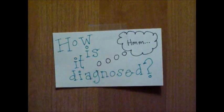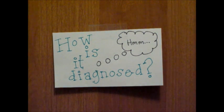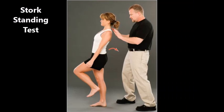How is it diagnosed? A diagnosis is reached after a detailed physical exam and imaging tests have been completed. A one-leg hyperextension, or stork standing test, is routine. The patient will be asked to stand on one leg and then hyperextend the spine. If pain is elicited in the lumbar spine upon this action, it is indicative of spinal injury and further imaging tests should be completed.